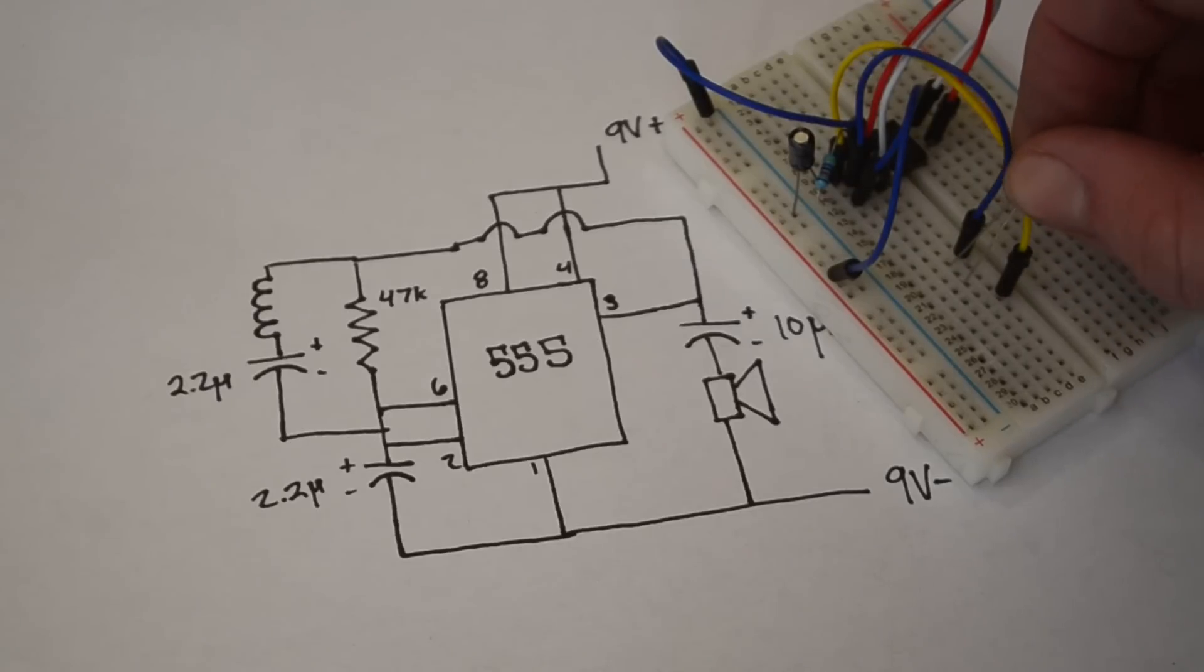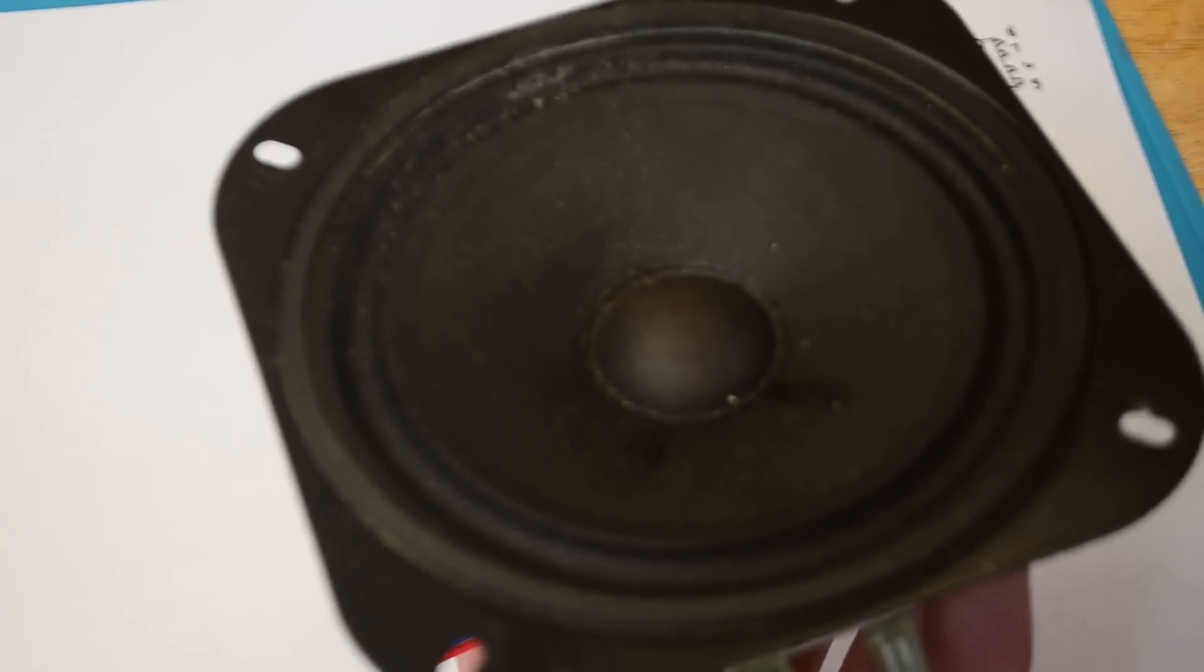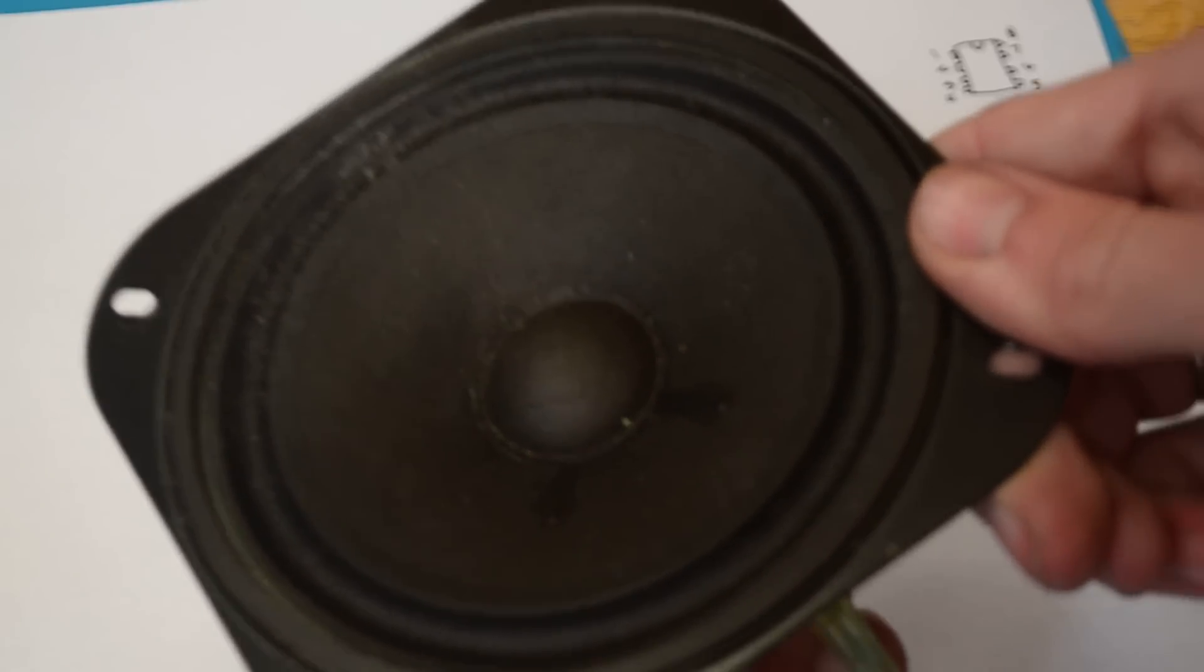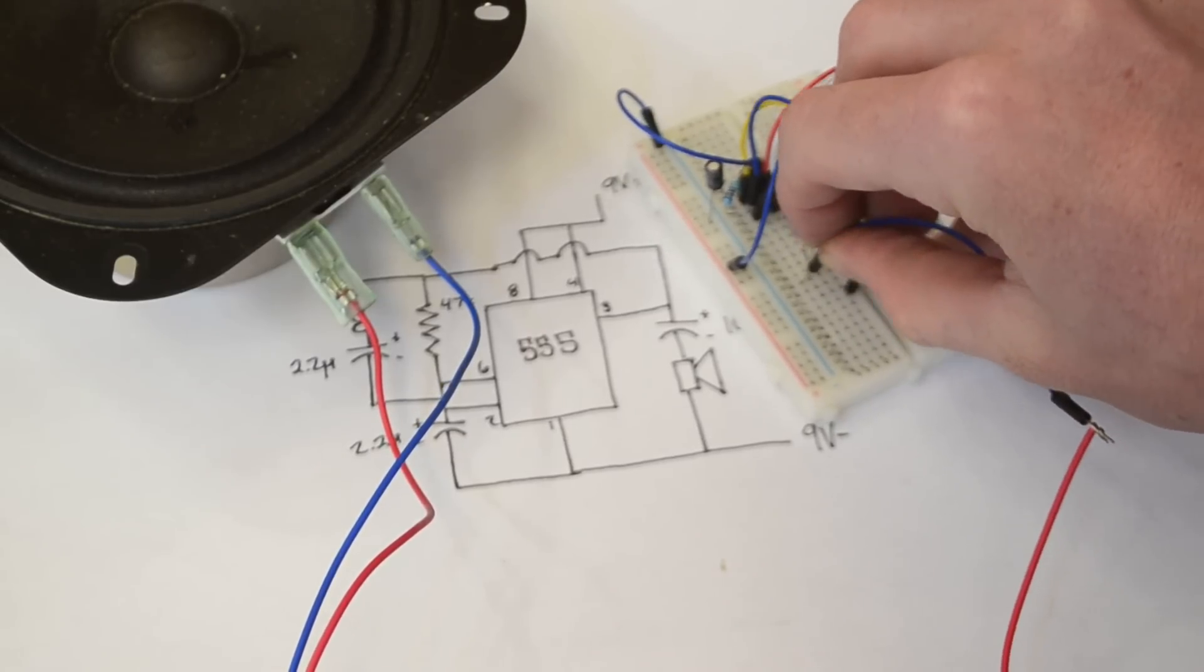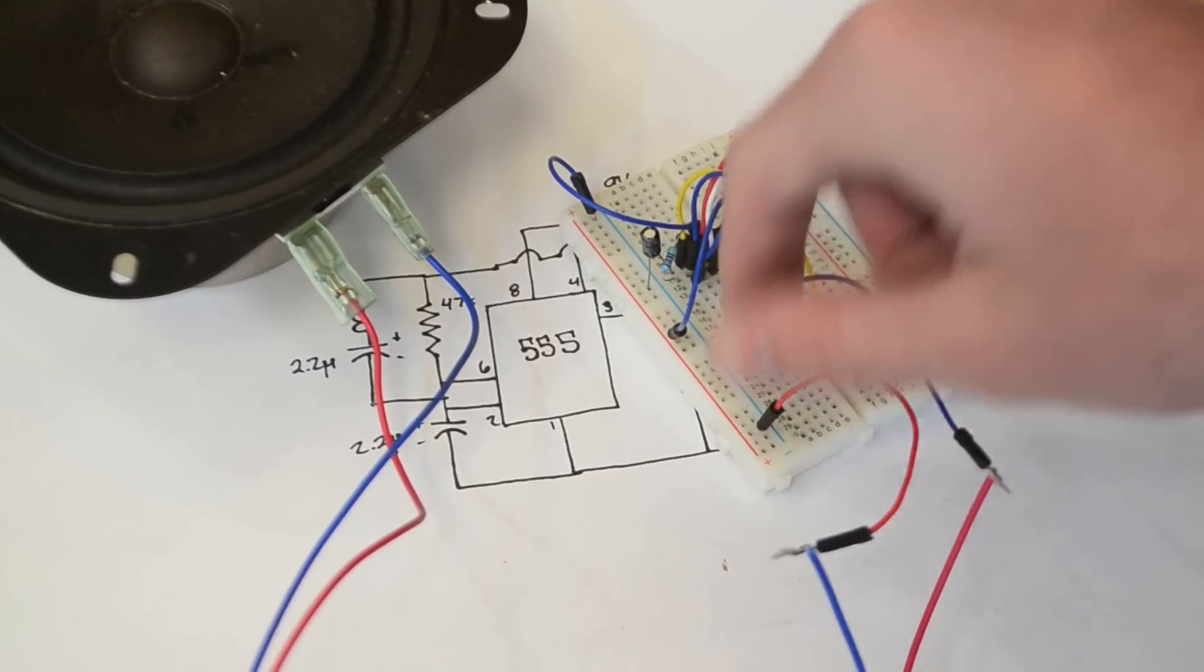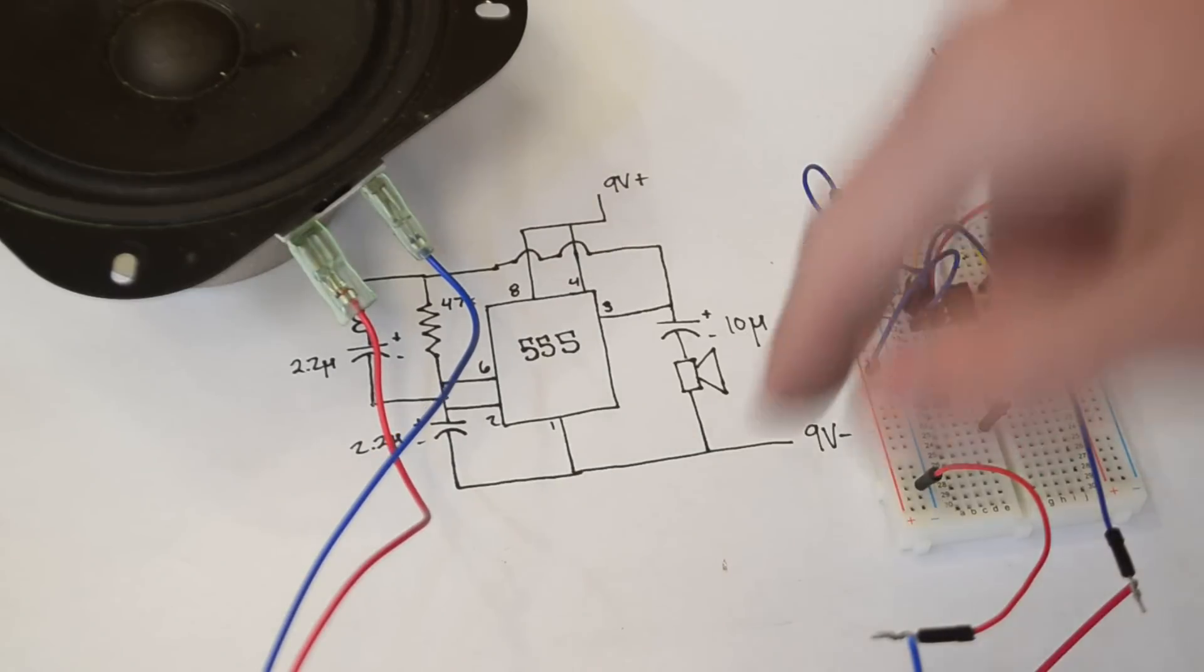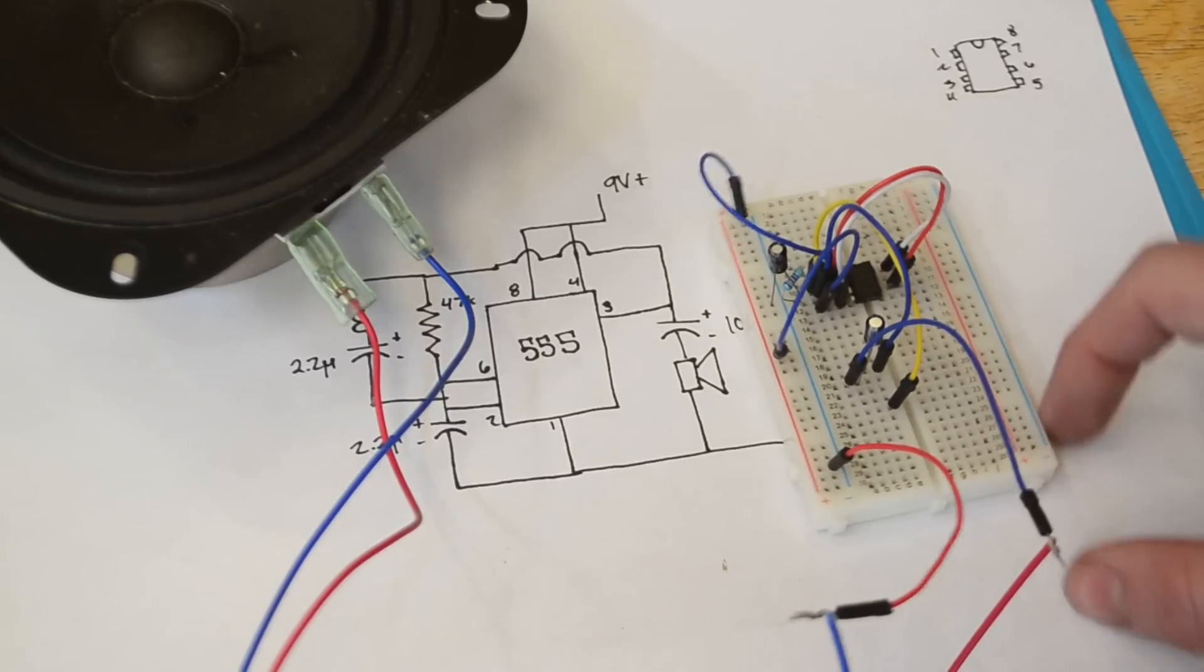Also I'm going to take this 10 microfarad capacitor and connect the positive end up to that pin 3 rail. Now I'm using a decently big 8 ohm speaker, however if you want you can get away with using a smaller one as well. And now I'm going to connect up one end of that speaker to the other end of that 10 microfarad capacitor, and the other end of that speaker is going to go to our negative rail. Now according to this circuit we should have everything done except for this coil and capacitor. So let's go ahead and connect up power to it to verify that it will make a sound.